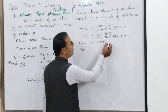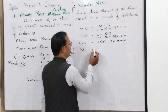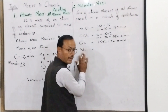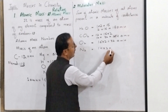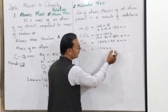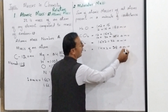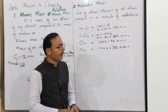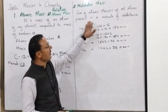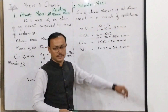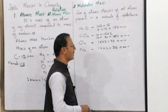32 AMU. Similarly nitrogen in molecular form: 14 multiply by 2 = 28 AMU. Students, I want to clarify here that I have written 'sum of atomic masses of all atoms present in a molecule of a substance' — I wrote substance, not element, in chemistry.